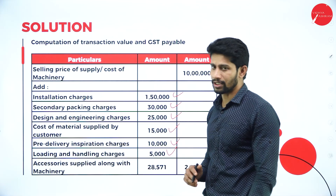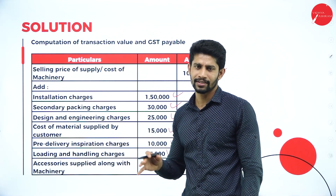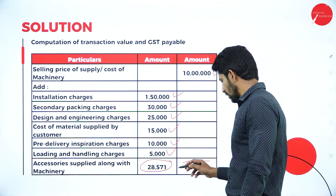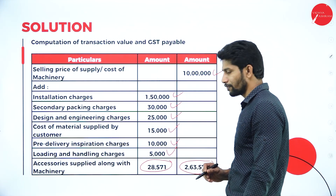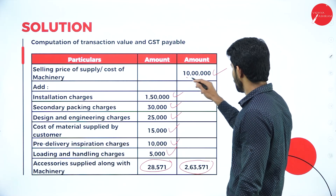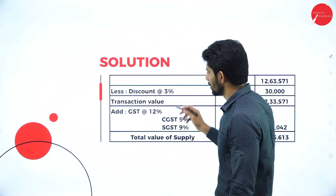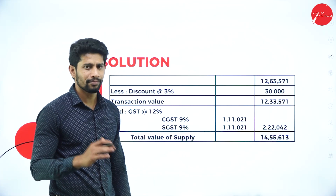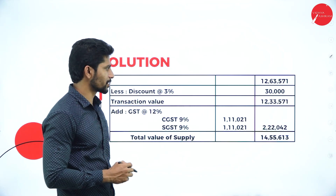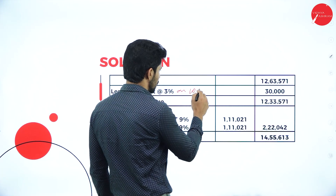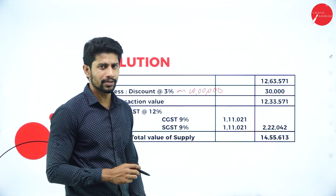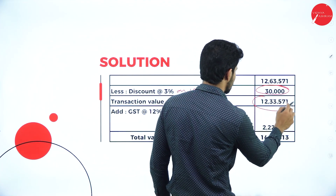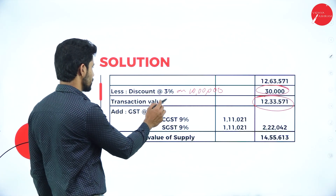The accessories of Rs. 30,000 are inclusive of 5% tax. Deducting that tax from Rs. 30,000 gives a balance of Rs. 28,571. The total of all expenses is Rs. 2,63,571. Add Rs. 2,63,571 to Rs. 10,00,000 to get Rs. 12,63,571. From that, deduct cash discount of 3% on Rs. 10,00,000, which is Rs. 30,000. Deducting Rs. 30,000 from Rs. 12,63,571 gives a balance of Rs. 12,33,571, which is called the transaction value.